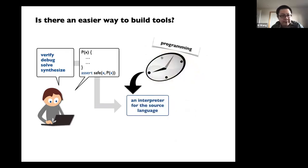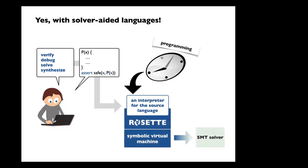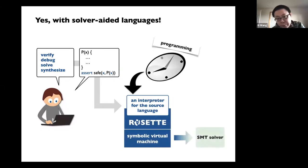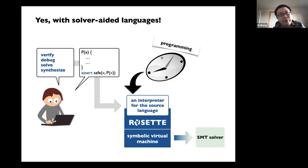The very attractive part of Rosette is that it provides a new programming model for creating those tools, so you don't have to create from scratch. What you need to do is write an interpreter for the source language, such as LLVM IR or the RISC-V instruction set. And Rosette itself basically behaves as a kind of symbolic virtual machine that will lift your interpreter into a verifier.